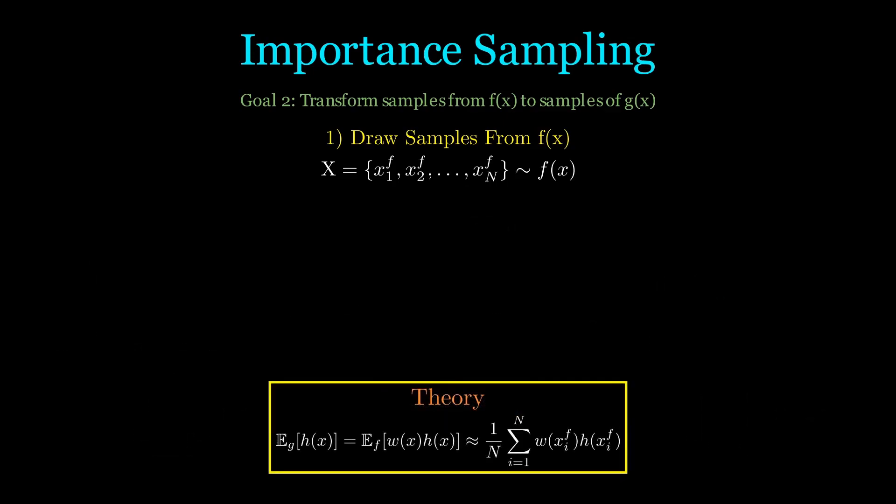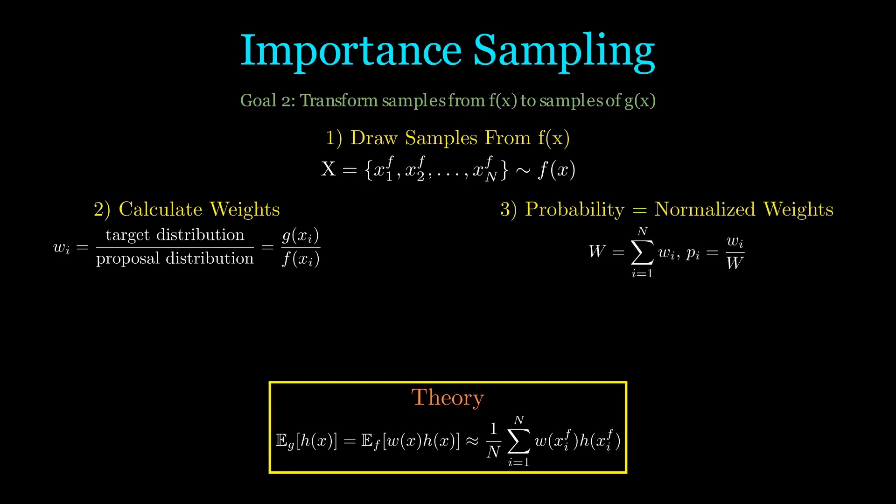We start off the same way by sampling f(x) and computing the importance weights w(x). Now since we want a valid probability distribution, we normalize our importance weights by w so that the sum of all pi is equal to 1.